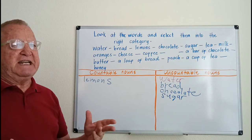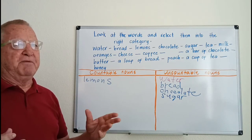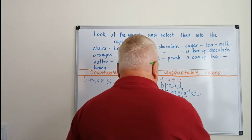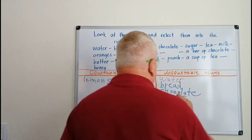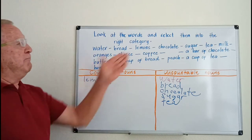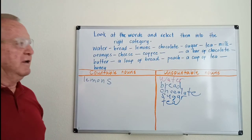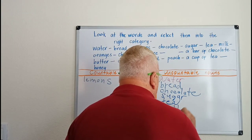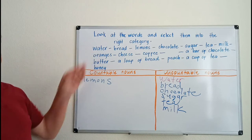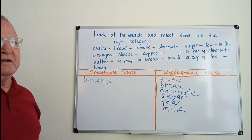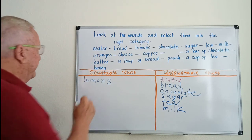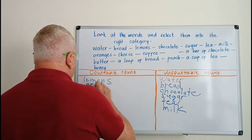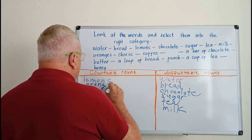Tea by itself — not a bag or cup of tea — is uncountable, a mass noun. Milk is also uncountable. Oranges — yes, we can count those, so oranges go under countable.